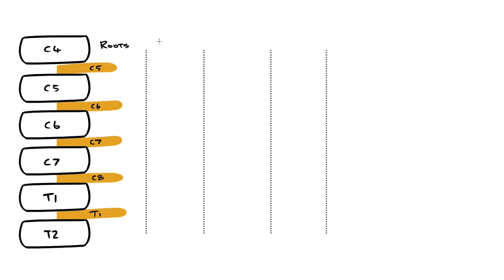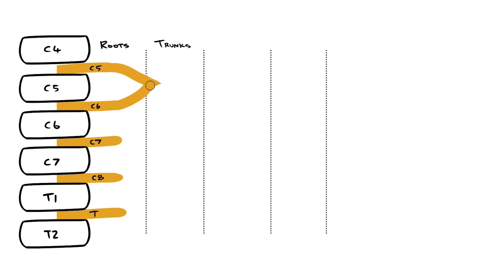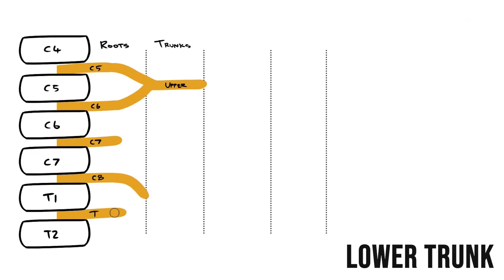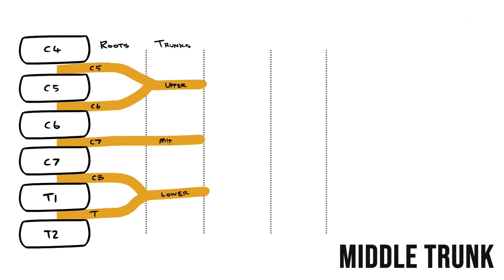Just like a tree, the roots come together and form trunks. C5 and C6 form an upper trunk. C8 and T1 form a lower trunk. And C7 continues, like the cruel loner it is, to form a middle trunk.